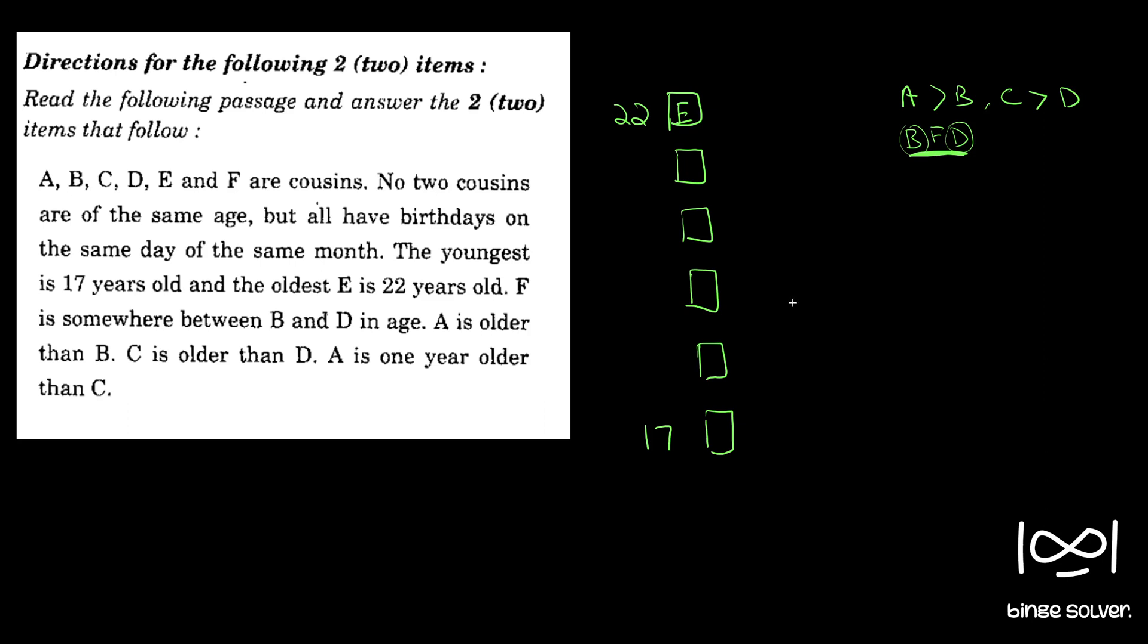Then A is one year older than C. So we got one more information. Since A is one year older, if you see it is 17 to 22, these people should be like this: 19, 21. So there is no other possibility since they all have different years as birthday. The only possibility is this. They don't have the same age. So it has to be like this.